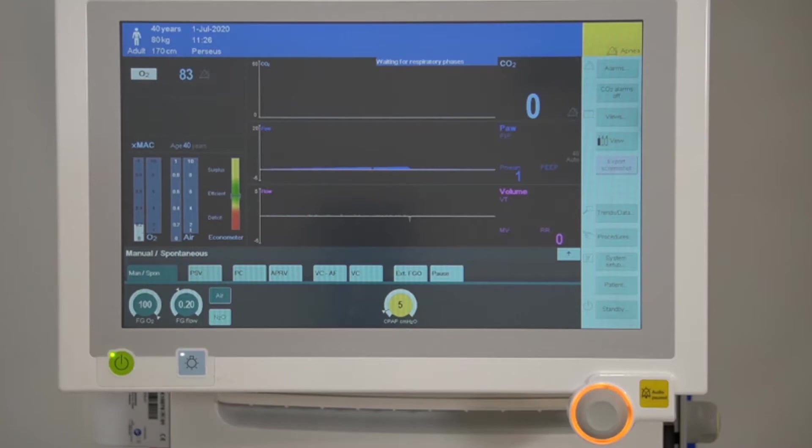Select the parameter, adjust your settings with the rotary knob, and anything that is yellow requires confirmation. Just keep in mind that a seal needs to be maintained to apply the CPAP.